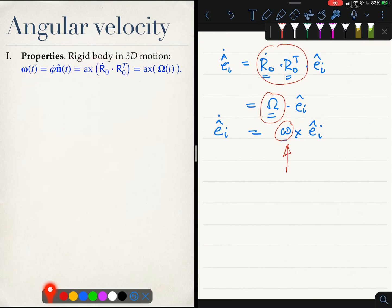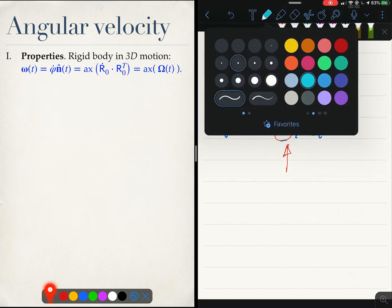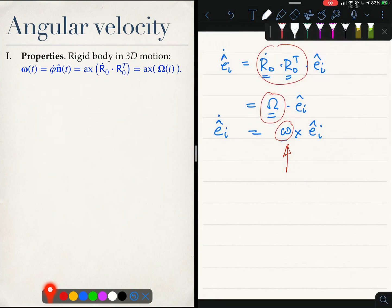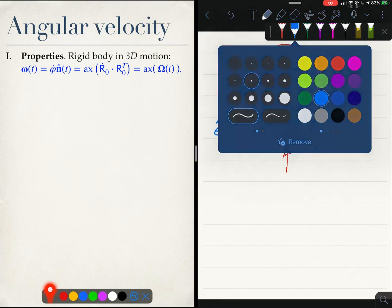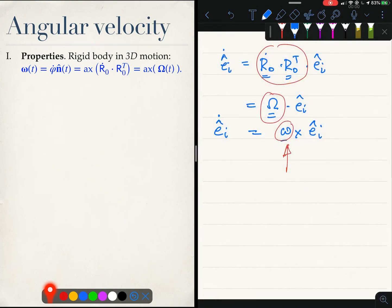This angular velocity can be obtained in at least two different ways. One is by computing phi dot n, which is related to the rotation tensor which links the body fixed coordinate system at times t and times t plus delta t.